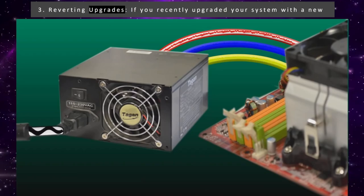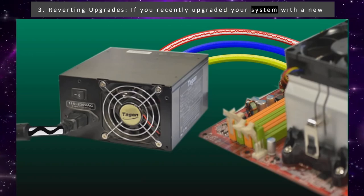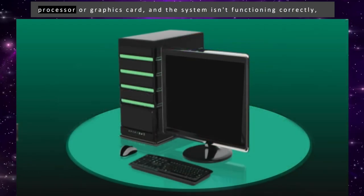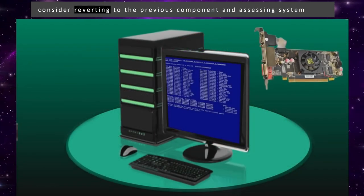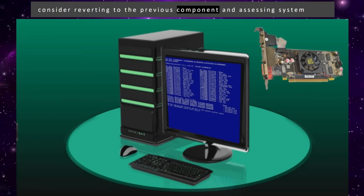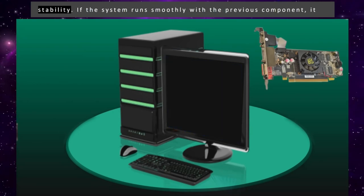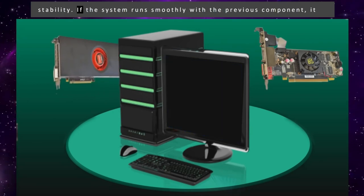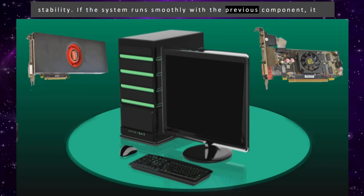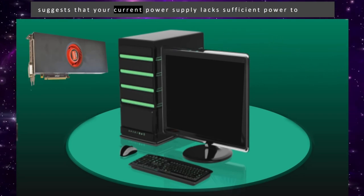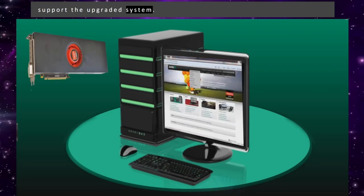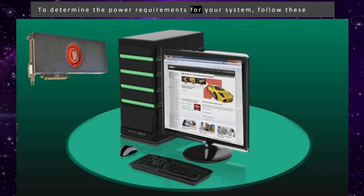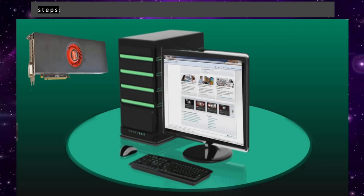Third, consider reverting upgrades. If you recently upgraded your system with a new processor or graphics card and the system isn't functioning correctly, consider reverting to the previous component and assessing system stability. If the system runs smoothly with the previous component, it suggests that your current power supply lacks sufficient power to support the upgraded system. To determine the power requirements for your system, follow these steps.